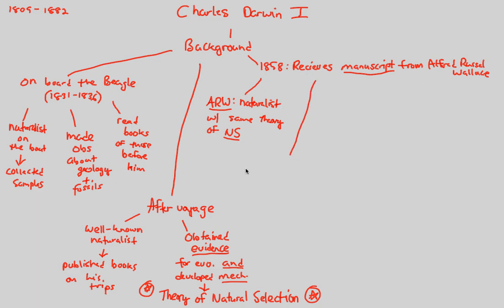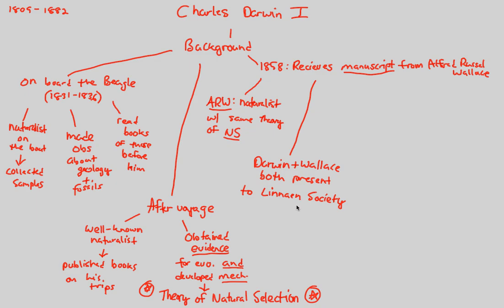Darwin and Wallace become close collaborators. They join forces together and both present their findings to the really important Linnaean Society of the time. Remember Carlos Linnaeus? There was actually, at the time of Darwin and Wallace, an entire scientific organization named after him — the Linnaean Society — devoted to correct and absolute science of the time, made up of the super minds of the era. This presentation was done in 1858.